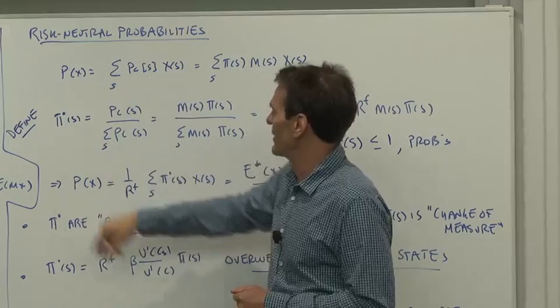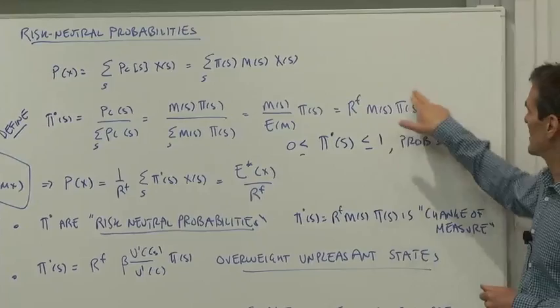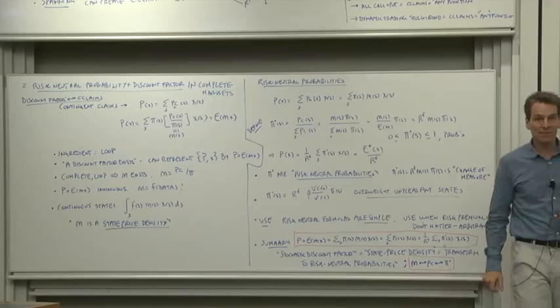So let's define the risk neutral probability as the contingent claims price divided by the sum of all contingent claims prices, or similarly with the discount factor, or most simply of all, just take the original probabilities and then weight them by the discount factor and the risk free rate.